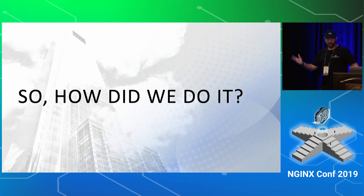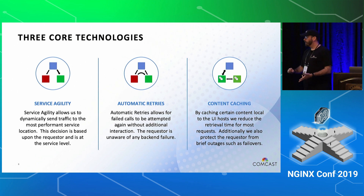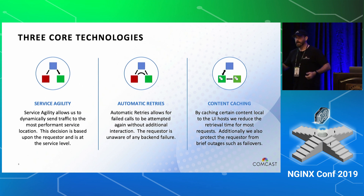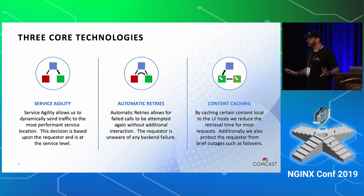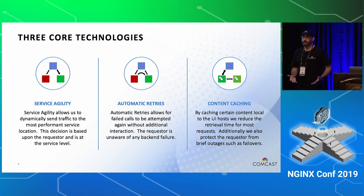So how did we actually build a resilient new model? We used three core technologies. First, we came up with the concept of service agility — being able to dynamically send traffic to the most performant microservice location. If I have two data centers, I want to send as much traffic as I can to whichever performs fastest to give me the best result, independent of where that may be. I also wanted to automatically retry on failure: if I'm talking to a data center and it times out, instead of returning an error to the user — which destroys that user experience — I want to retry behind the scenes so they never see it. A user will tolerate slight latency much better than a flat-out error.